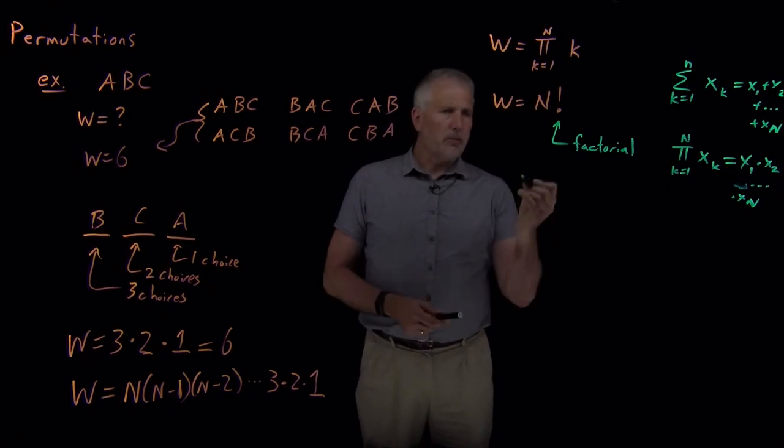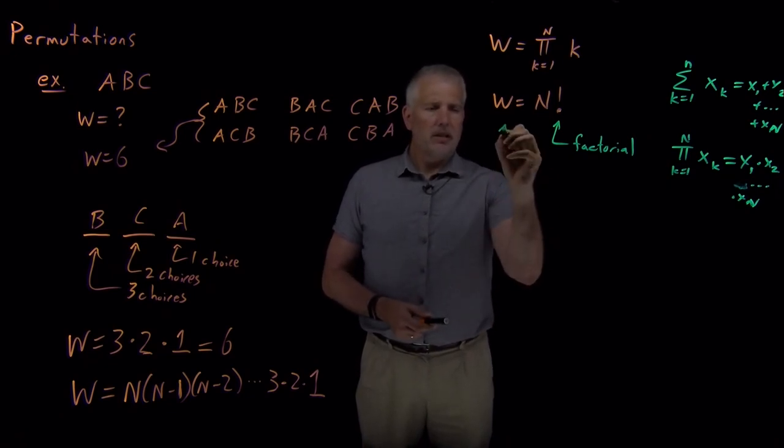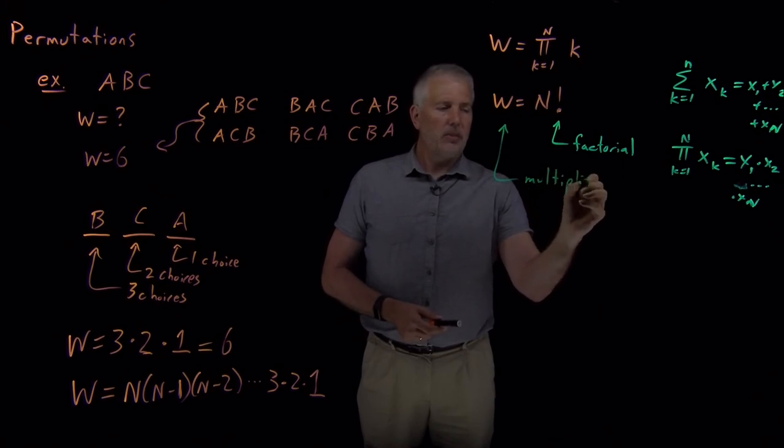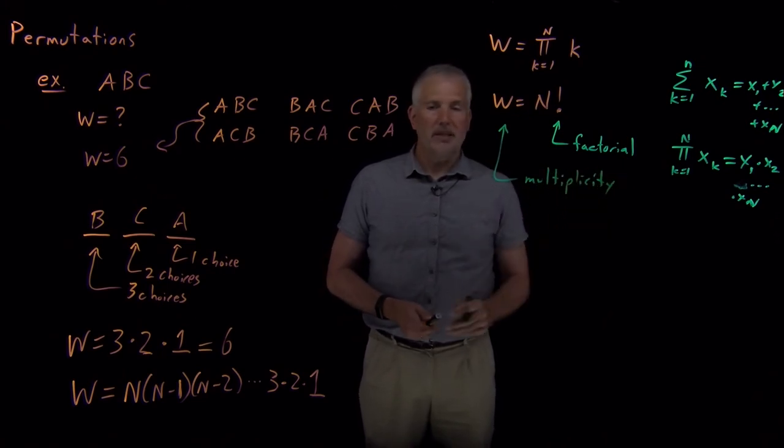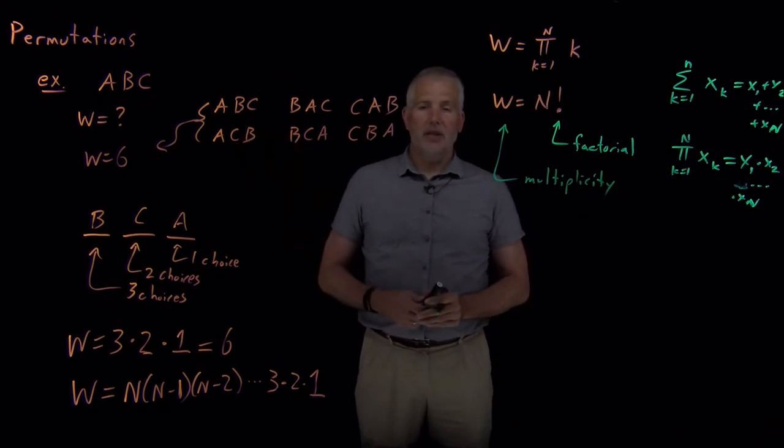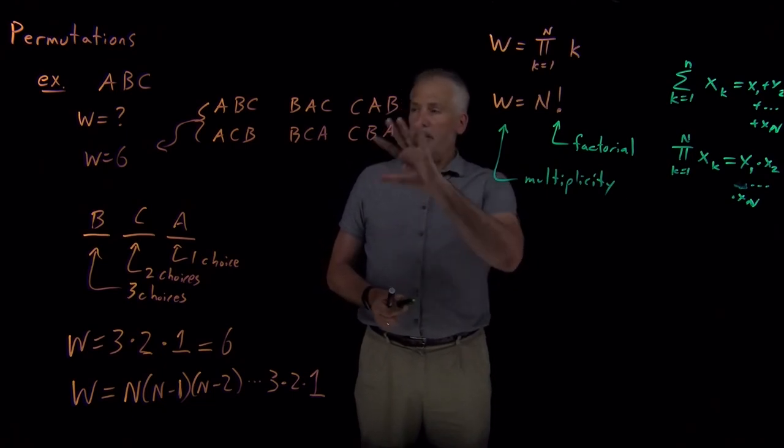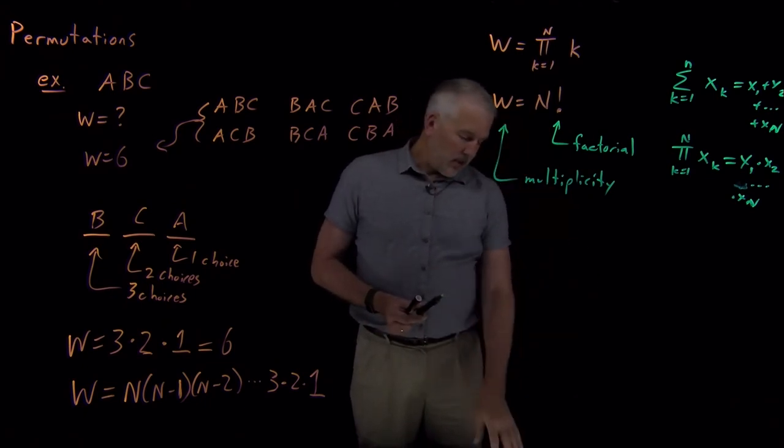While we're talking about terminology, this quantity N that we're talking about, the number of ways of doing something, in this case the number of ways of permuting these letters or these objects, the fancy word for the number of ways we can do something is the multiplicity, the total number of different ways of arranging something or the total different ways that something can exist.